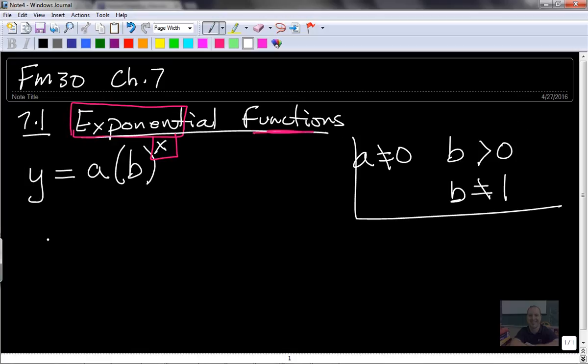So an example would be Y equals 10 to the power of X. That's an example. And if we were writing it just like our format here, this A would be one, and 10 would be the base, B there. But Y equals 10 to the power of X is an exponential function. So the variable is in the exponent position. That's the big deal.